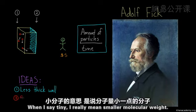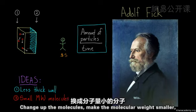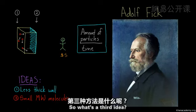When I say tiny, I really mean a smaller molecular weight. So small molecular weight molecules. That's the second idea. Change up the molecules, make the molecular weight smaller. And as Graham's Law tells us, they'll move faster.